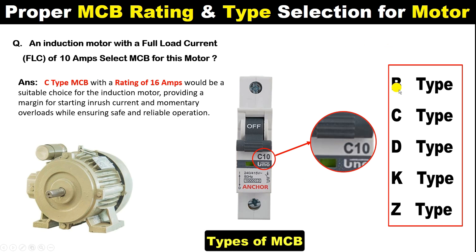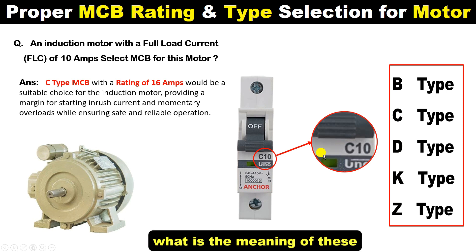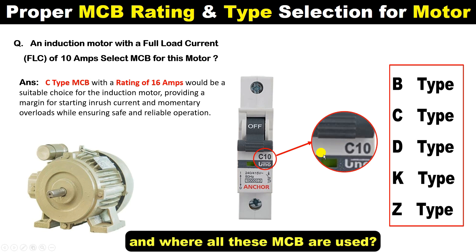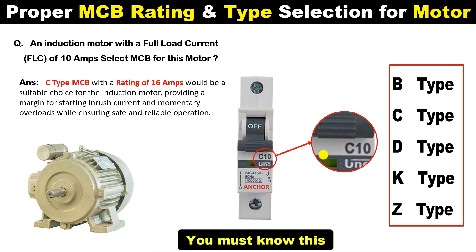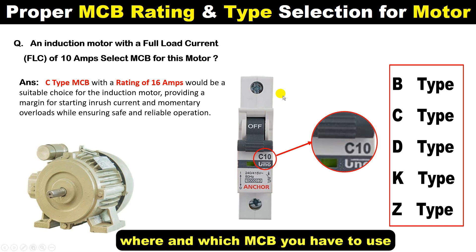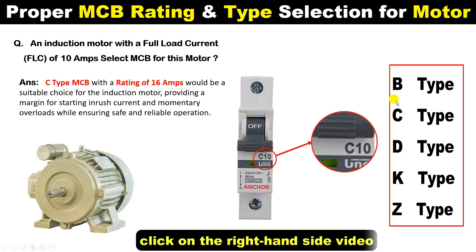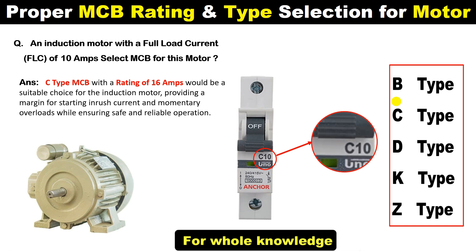The types of MCB — B, C, D, K, and Z — what they mean and where each type is used, you must know this. If you want to learn where and which MCB you have to use and why, then click on the video on the right-hand side for complete knowledge.